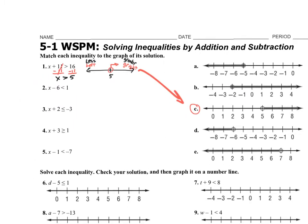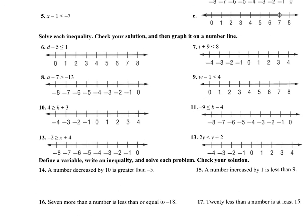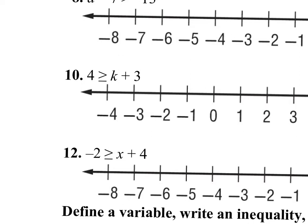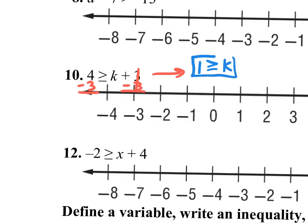I'm going to jump over here where we're actually solving inequalities and doing that same graph. I'm going to do number 10. I like number 10 because the K is on the right side. We want to solve for K. K is on the right side of this inequality. We need to get K by itself — get rid of this plus 3 by doing minus 3. What I do to one side, I must do to the other side. So my new inequality: 4 take away 3 is 1, we have this inequality symbol, and K is all that's left on the right side. However, it does say 1 is greater than or equal to K.